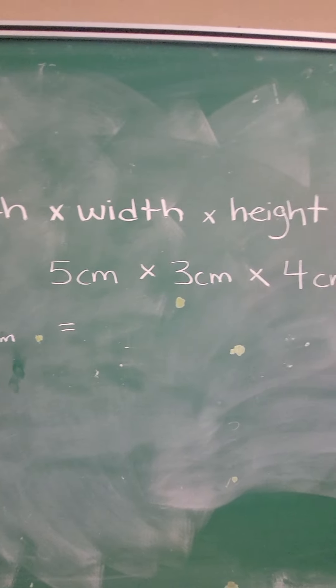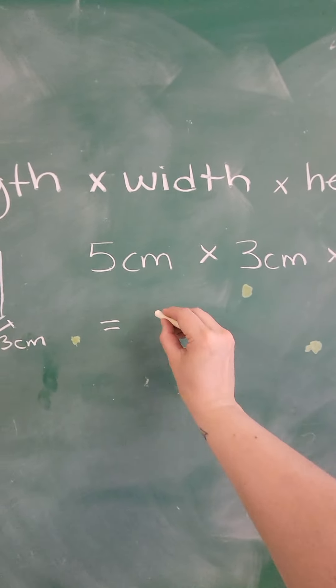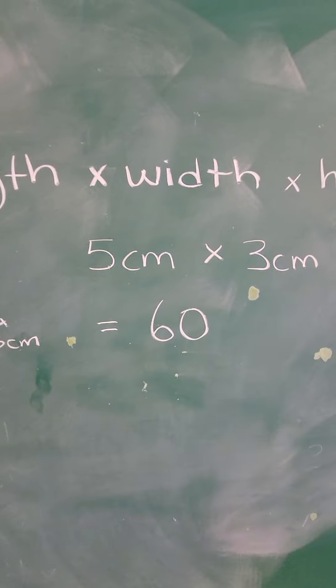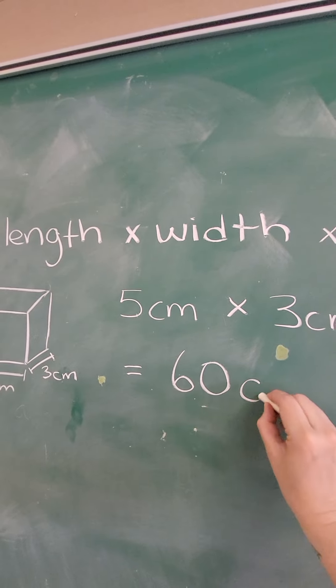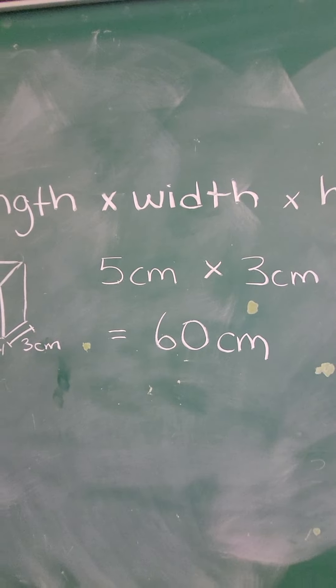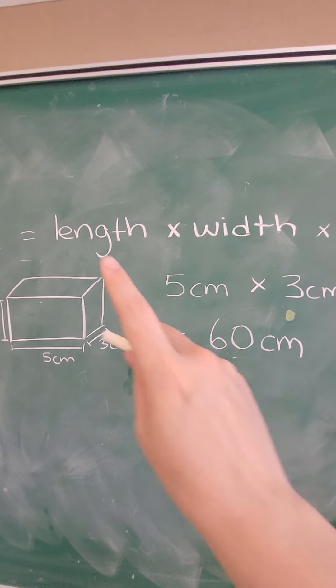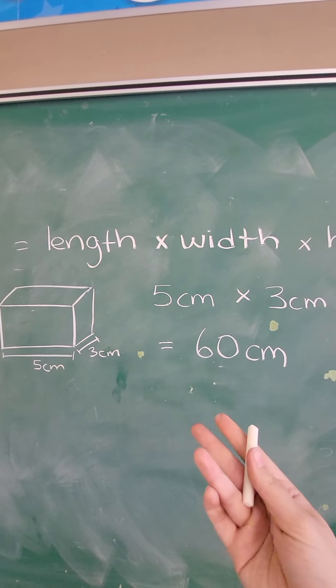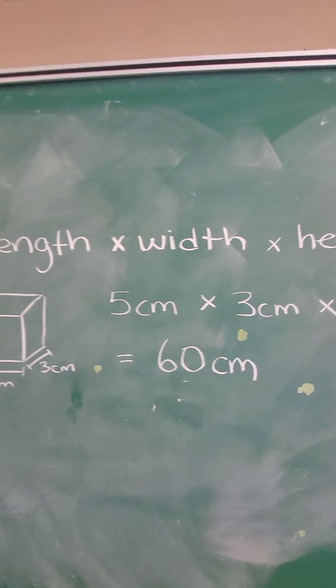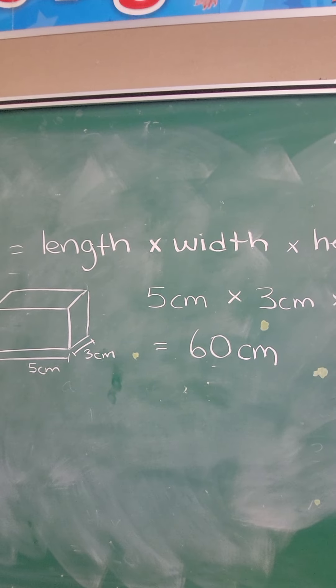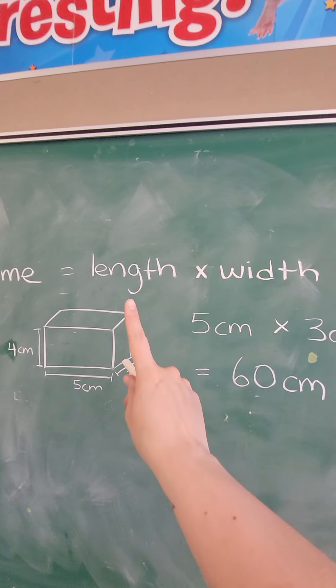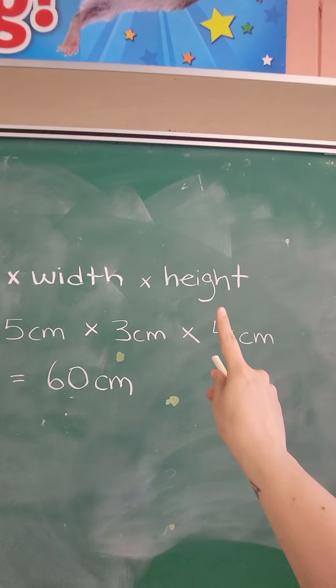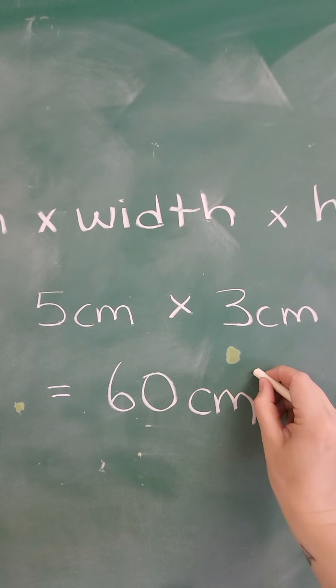So the volume, 5 times 3 times 4, is 60. And the way we write volume, we're still using the same unit of measurement centimeters, but if you remember from area, it was just length times width. So because it was two dimensions, we put a little 2 up here. But you can probably take a guess as what the number would be for volume, because it's literally 1, 2, 3 dimensions. So it's a little 3.